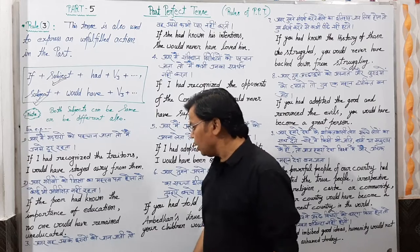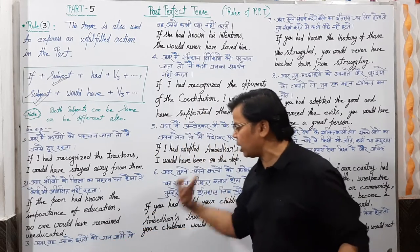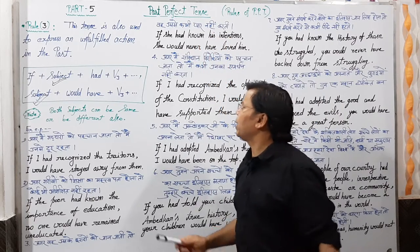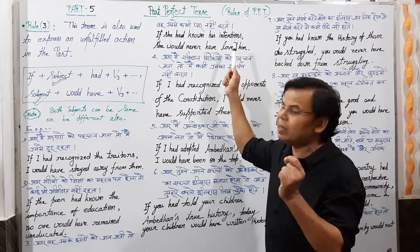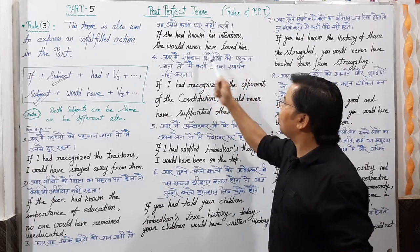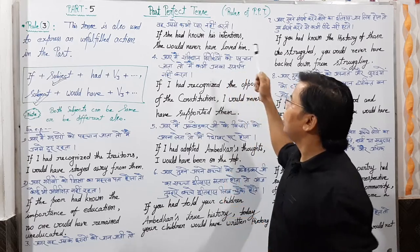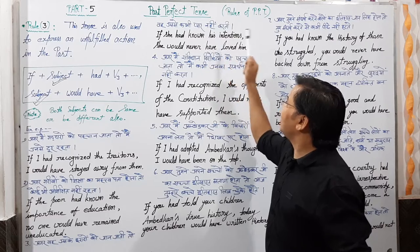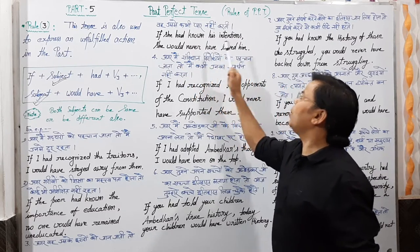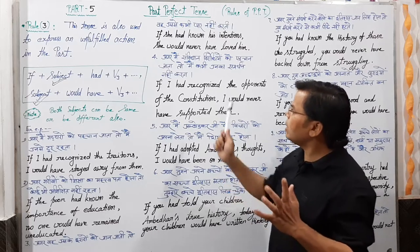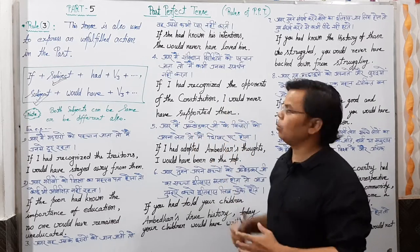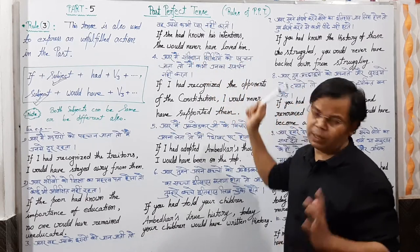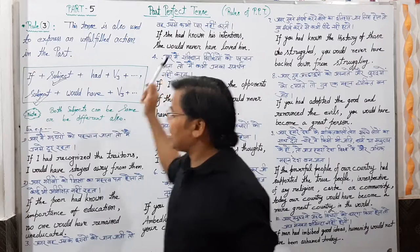Third example: अगर वह उसके इरादों को जान जाती, तो वह उससे कभी प्यार नहीं करती। English में: if she had known his intentions, she would never have loved him। इसी sentence को दूसरी तरीके से बोल सकते हो: she would never have loved him if she had known his intentions।